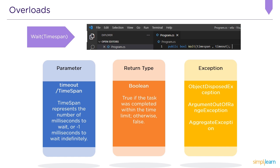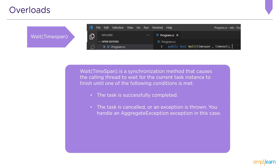There are three exceptions used in Wait(TimeSpan). First, ObjectDisposedException, which indicates the task has been disposed. Second, ArgumentOutOfRangeException, used when the timeout is less than minus one milliseconds or exceeds the maximum value. Third, AggregateException, used when the task was cancelled or an exception was thrown during task execution; information is contained in the InnerExceptions collection.